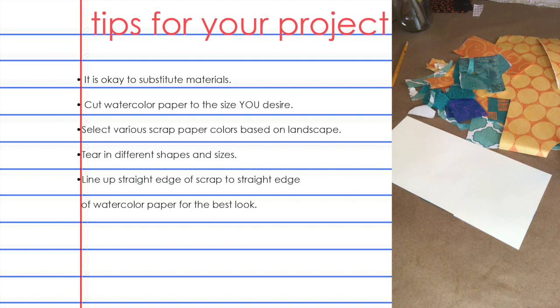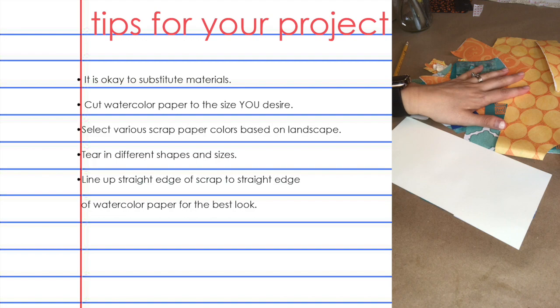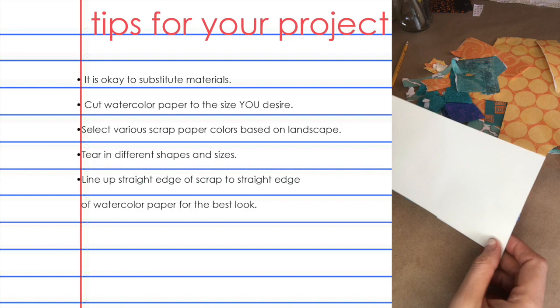I'm going to be talking about the simple materials we're using in this project. Remember to substitute with what you have at home — if you don't have scrapbook paper, replace it with newspaper, old magazines, or even wrapping paper. Just be creative with whatever you have. Cut your watercolor paper to the size that you desire; I'm setting mine up in a narrow landscape format.